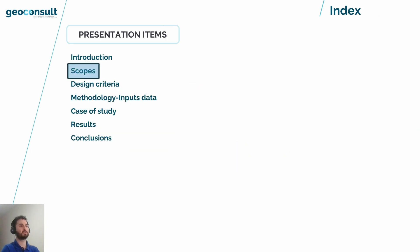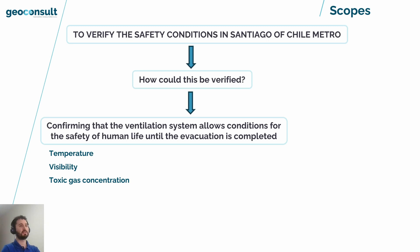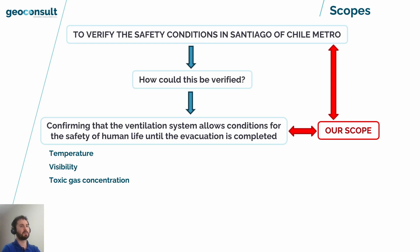The next item will be the scopes. Our main scope is to verify the safety condition in the Santiago Chile metro. The worst station to verify is Pedro Valdivia. If the ventilation system works correctly, the environment condition should be in a measured range that can be considered safe. This parameter can be grouped into temperature, visibility, and toxic gas concentration. Our scopes can be defined according to this slide.